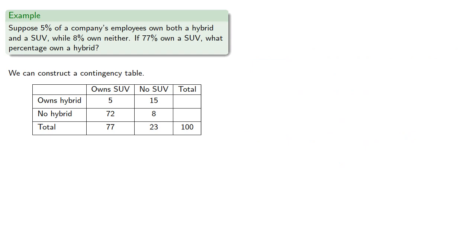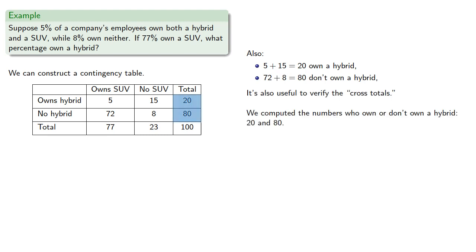And finally, we can round out the totals. We note that 5 plus 15, or 20, own a hybrid, and 72 plus 8, or 80, don't own a hybrid. It's also useful to verify the cross totals. We computed the numbers who own or don't own a hybrid, 20 and 80. This should add to the total number, so we check 20 plus 80 equals 100.